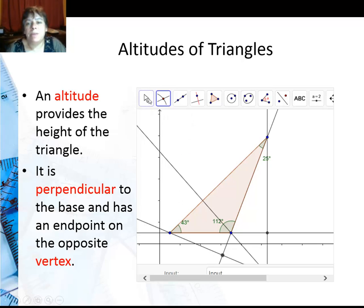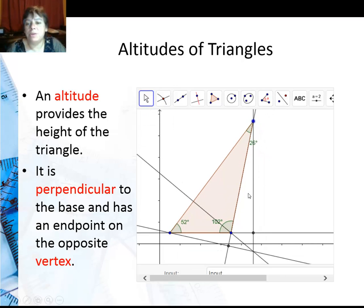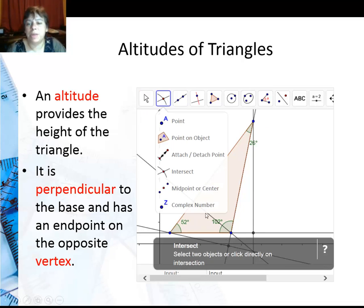You can actually move the points around. For this triangle, this is an obtuse triangle. And where do all three altitudes intersect? They actually intersect over here. Let me mark that intersection point.